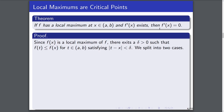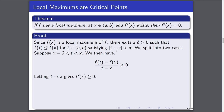For the proof, since f of x is a local maximum of f, we regurgitate the definition: there exists some delta greater than 0 such that f of t is less than or equal to f of x for t where the absolute value of t minus x is less than delta. There are two different cases. If we are to the left of x, so t is between x minus delta and x, then the difference quotient (f of t minus f of x) over (t minus x) has to be greater than or equal to 0.